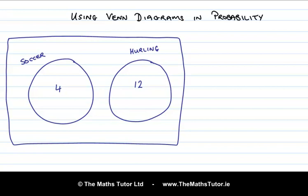Let's look at this example. This Venn diagram represents a group of people and shows the sports that they play. There are 16 people in total, 4 of those play soccer, and 12 play hurling. There is no overlap between the two sets, so there is no one who plays soccer and hurling.